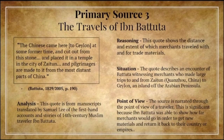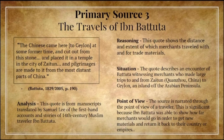Primary Source 3: Travels of Ibn Battuta. Analysis: This quote is from manuscripts translated by Samuel Lee, containing first-hand accounts and stories of 14th century Muslim traveler Ibn Battuta. Reasoning: This quote shows the distance and extent to which merchants traveled with and for trade materials. Situation: The quote describes Battuta witnessing merchants who made large trips to and from Zaytun to Ceylon, an island off the Arabian Peninsula. Point of View: The source is narrated through the point of view of a traveler. This is significant because Ibn Battuta was able to show how far merchants would go in order to obtain new materials and return them to their countries or empires.